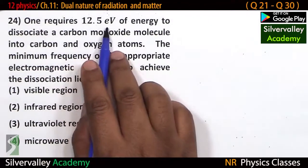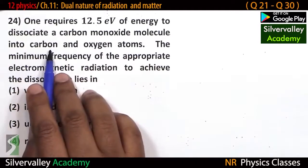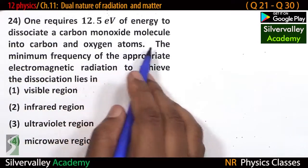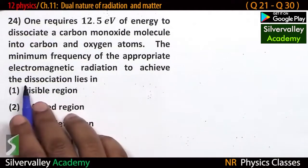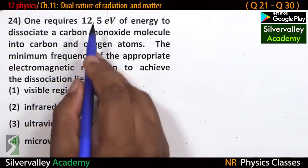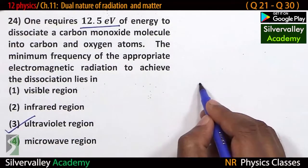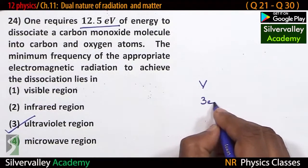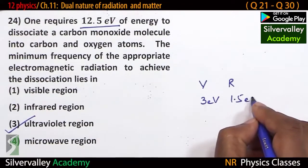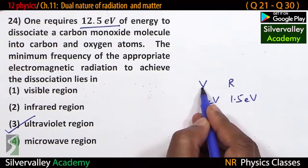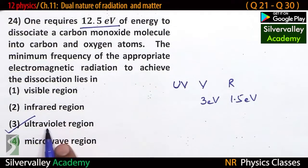One requires 12.5 eV of energy to dissociate a carbon monoxide molecule into carbon and oxygen atoms. The minimum frequency of the appropriate electromagnetic radiation to achieve the dissociation lies in which range? It is 12.5 eV — recall that violet is about 3 eV and red is about 1.5 eV. Energy greater than 3 eV means ultraviolet. This is 12.5, which is greater than 3, therefore ultraviolet.